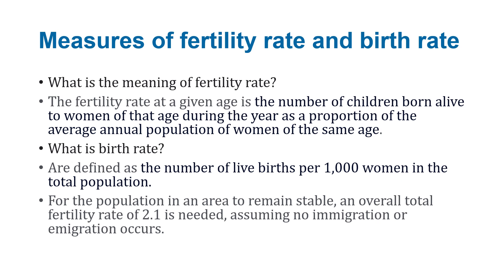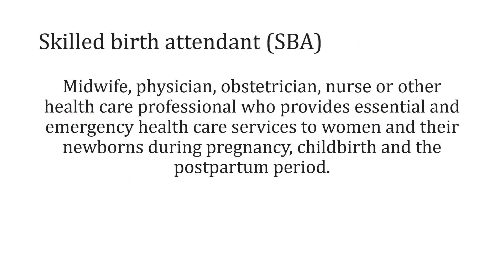Other measures include fertility rate and birth rate. The fertility rate at a given age is the number of children born alive to women of that age during the year as a proportion of the average annual population of women of the same age. Birth rate is the number of live births per 1,000 women in the total population. A total fertility rate of 2.1 is required to stabilize a population, assuming no immigration or emigration. A skilled birth attendant is a midwife, physician, obstetrician, nurse, or other health care professional who provides essential and emergency health services during pregnancy, childbirth, and the postpartum period.